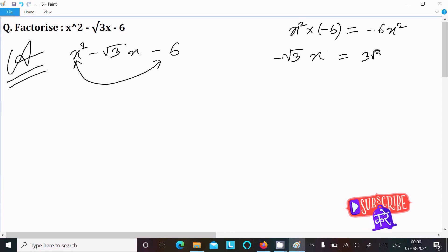We can write √3x as -3√3x + 2√3x. If you subtract it equals -√3x, but when I multiply -3√3x into 2√3x, 3 times 3, 3 times 2 is 6, 6 times 3 is 18, so it comes 18x².